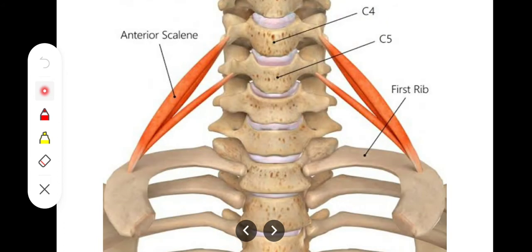The first one is the scalenus anterior muscle. Its origin is from the anterior tubercle of the transverse processes of cervical vertebrae C3 to C6. So the typical cervical vertebrae C3 to C6 — the anterior tubercle of the transverse processes — is the origin of our scalenus anterior muscle. It will be inserted onto the superior surface of the first rib.